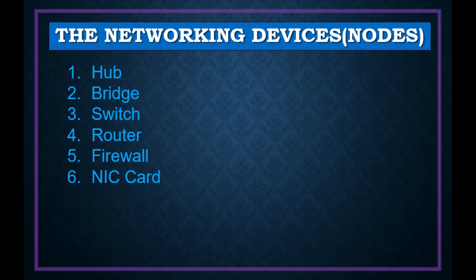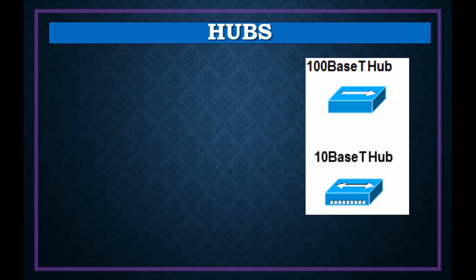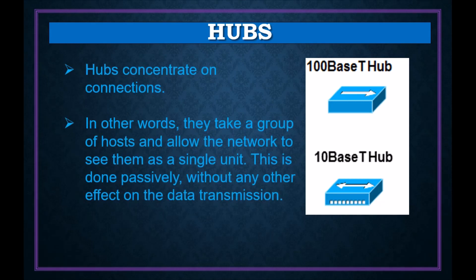Networking devices include hub, bridge, switch, router, firewall, and NIC card. Starting with the hub — a hub is a non-intelligent device. Nowadays we are not using hubs because they are very old, but we still need to know about them. A hub is a collision domain device and is not full duplex.